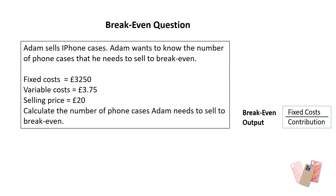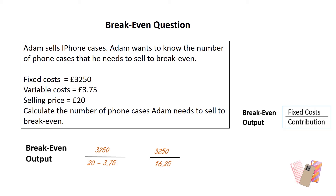Adam sells iPhone cases and wants to know the number of phone cases he needs to sell in order to break even. Fixed costs are £3,250, variable costs are £3.75, and selling price is £20. Contribution is £20 minus £3.75, so it's £3,250 divided by £16.25, giving an answer of 200. Adam needs to sell 200 phone cases to break even.